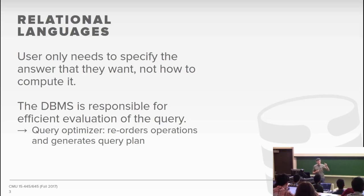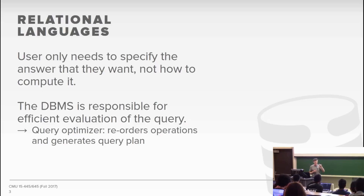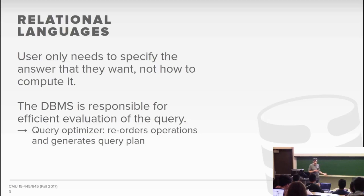We'll cover the query optimizer in a few weeks. It's the black art of database systems — the piece that commercial systems keep very secretive because they've spent years and millions of dollars building it. This is really what separates commercial database systems from the open source ones. The SQL Server Query Optimizer is really, really good — much better than MySQL, Postgres, and SQLite — because they've had smart people with PhDs and a lot of money spending a lot of time improving it.